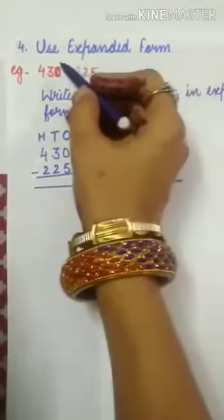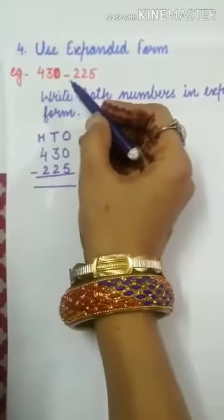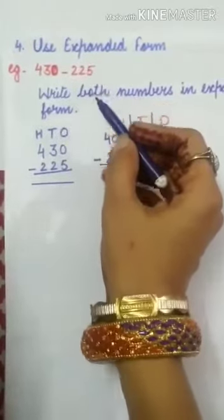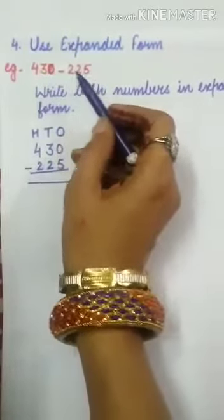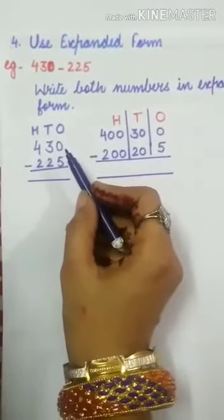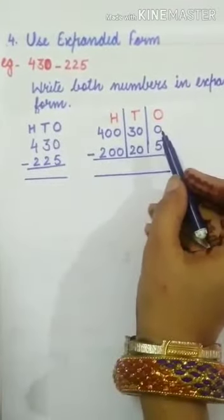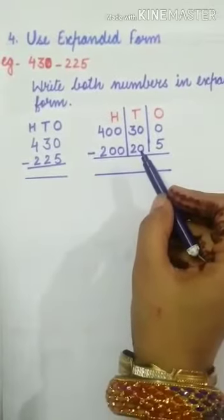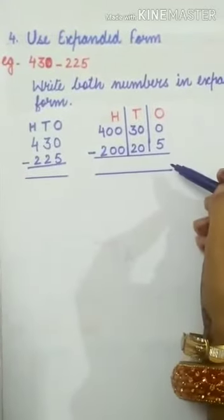Now the last strategy is use expanded form. The question is 430 minus 225. In this strategy, first of all we have to write down the expanded form of both numbers. 430 can be written as 400 plus 30 plus 0, and 225 can be written as 200 plus 20 plus 5. Now we will subtract these two numbers.